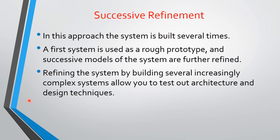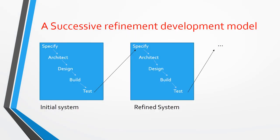The next one is successive refinement. In this approach, the system is built several times — a first system is used as a rough prototype and successive models of the system are further refined. Refining the system by building several increasingly complex systems allows you to test out architecture and design techniques. The successive refinement development model starts with an initial system — specification, architecture, design, build, test — and then a refined system, modifying anything that needs to be changed, repeating the cycle.